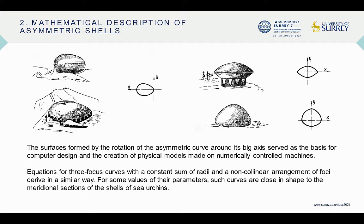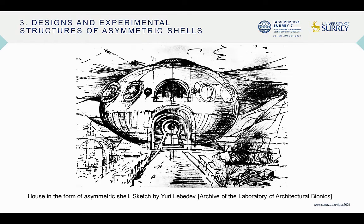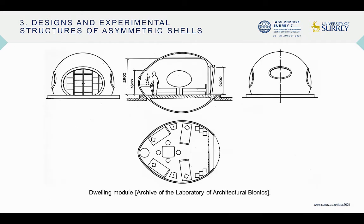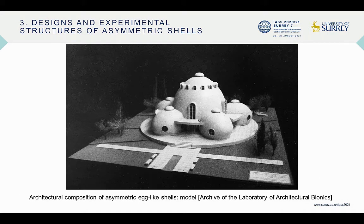The surfaces formed by the rotation of the asymmetric curves around the big axis served as a basis for computer design and creation of physical models, designs, and experimental structures of asymmetric shells. The main varieties were air-supported pneumatic structures and thin concrete shells with asymmetric pneumatic formworks.